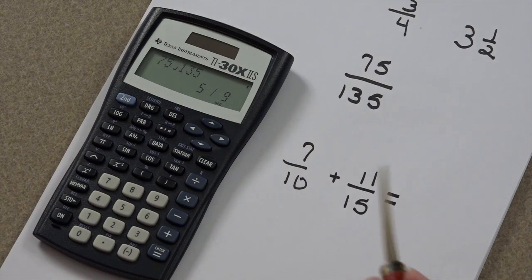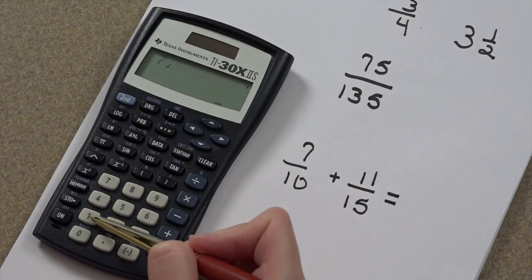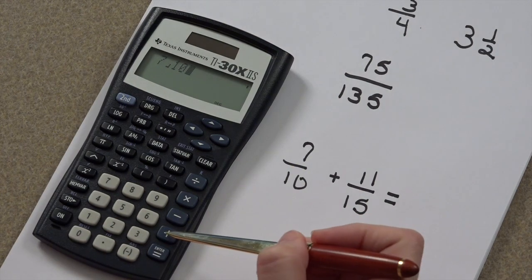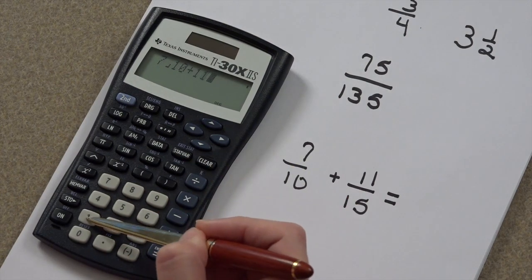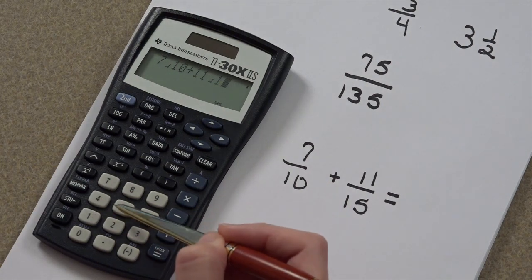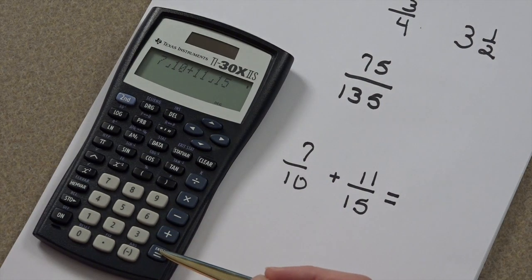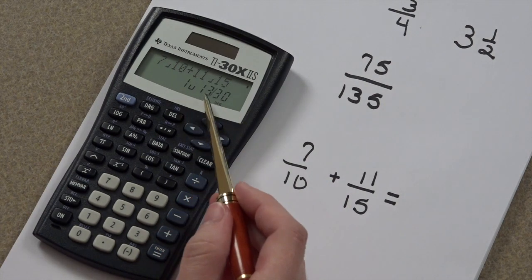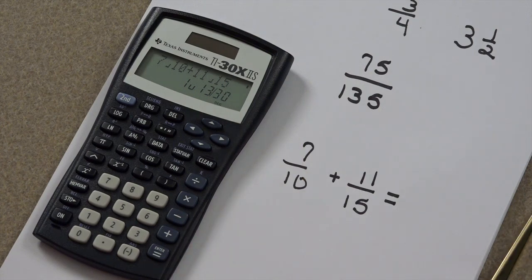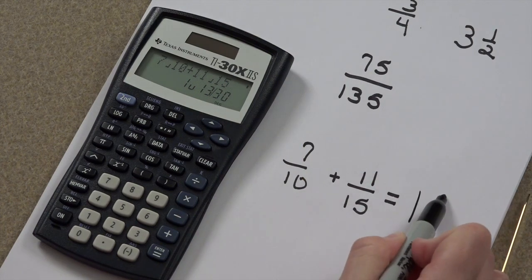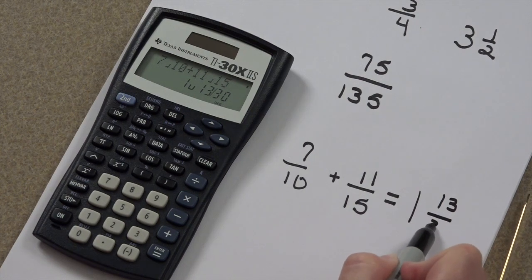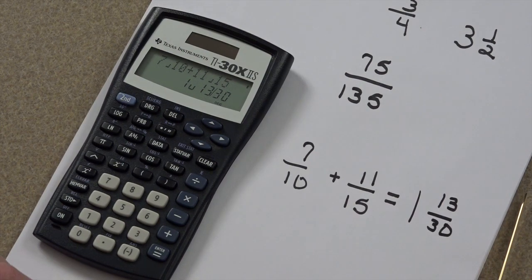7 over 10 plus 11 over 15, and that equals 1 and 13 thirtieths. Pretty spiffy.